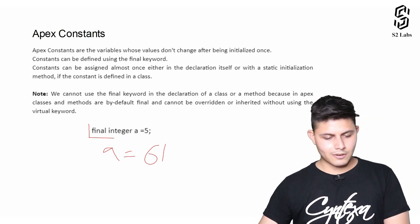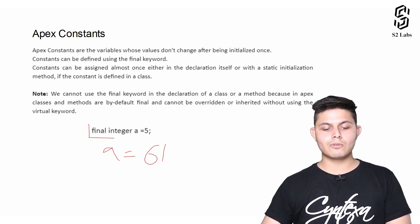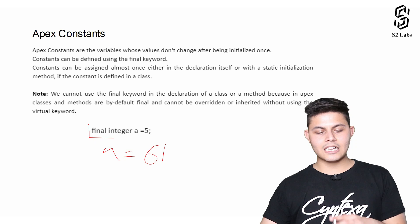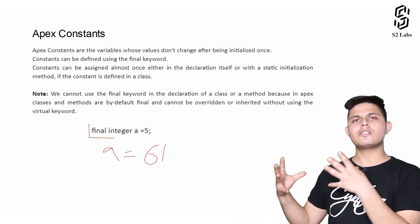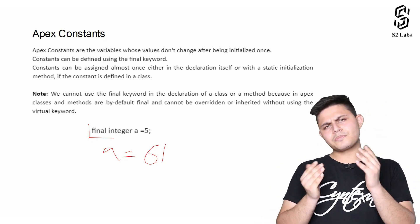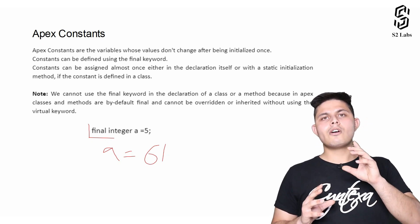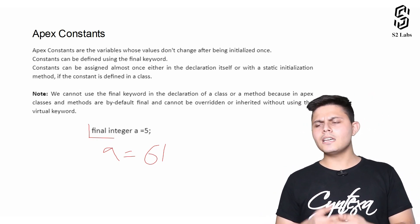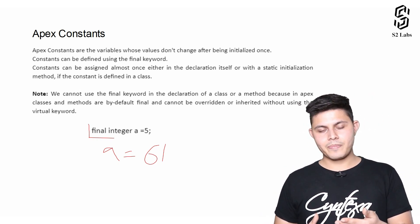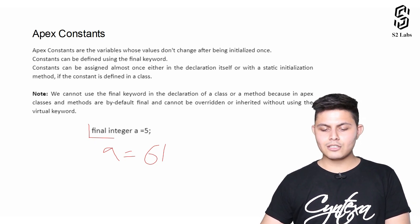Apex constants are variables whose values don't change after being initialized once. Constants can be defined using the 'final' keyword. Constants can be assigned only once — either in the declaration itself or with a static initialization method if the constant is defined in a class. Once declared or defined, the value cannot be changed further in the program. There is also a note: we cannot use the 'final' keyword in the declaration of a class or method.